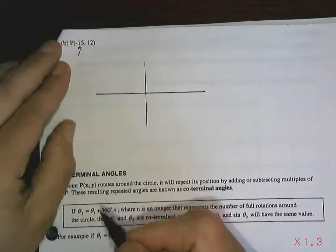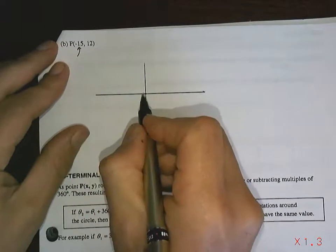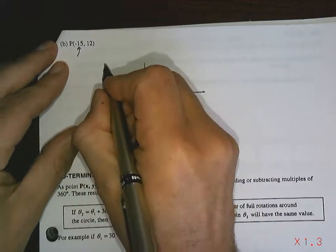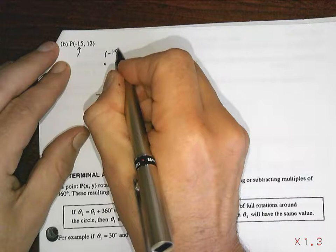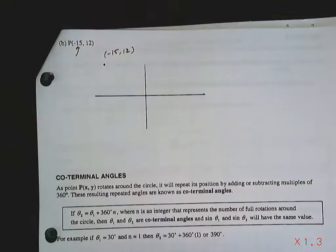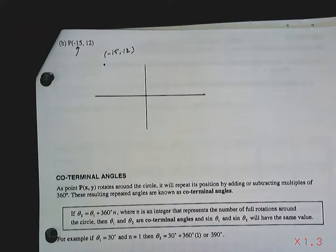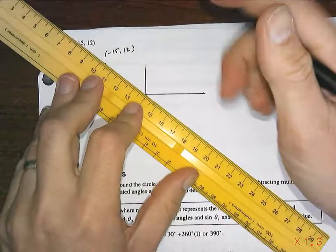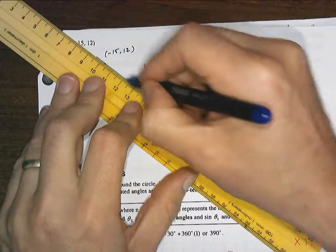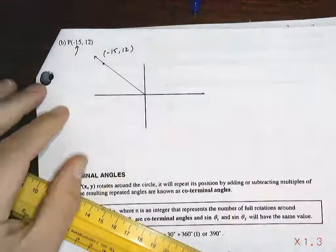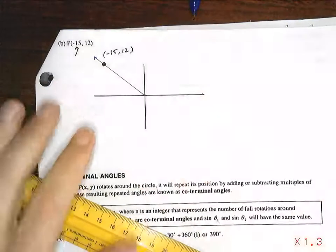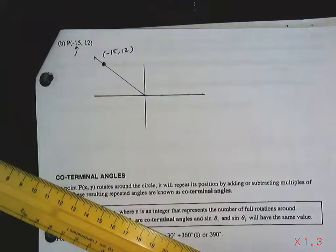So this point is going to be over here and up here, negative 15 comma 12. Now everything else is pretty straightforward. What you do is you draw the terminal arm. There it is. And we want it to stop at negative 15 comma 12. Now I drew through it, but that's where it stops.